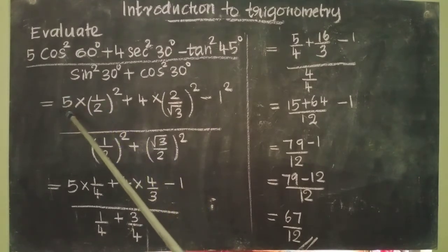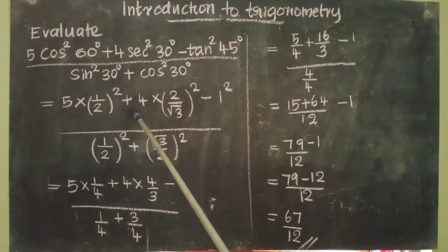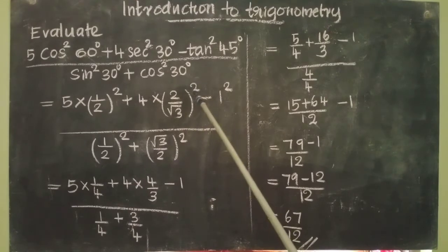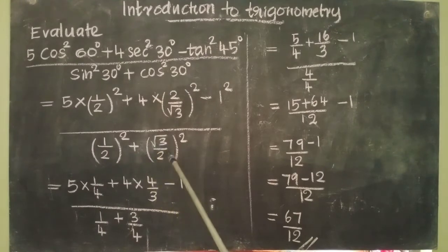So we get 5 × (1/2)² + 4 × (2/√3)² - 1² divided by (1/2)² + (√3/2)².